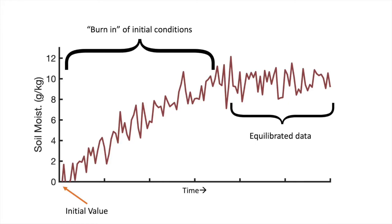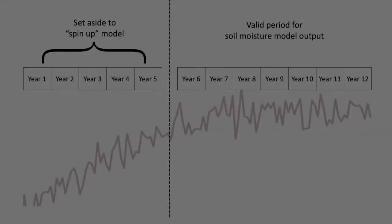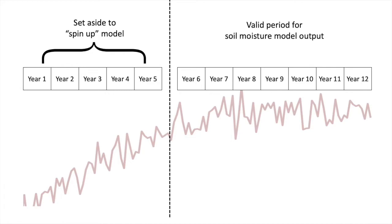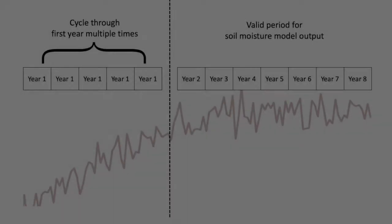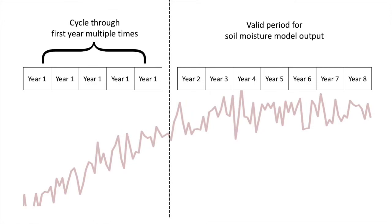And so a couple different options, two really easy different options: you set aside, say, I don't know, a year, two years, five years, ten years of data that you use only to initialize the model before running it with the rest of your data. Another one is to just cycle through one year again and again and again. And so you create like a dummy data set of ten years, which is really just a copy of the first year, use that to initialize your model and then start with your period of data that you want to actually use for your analysis.